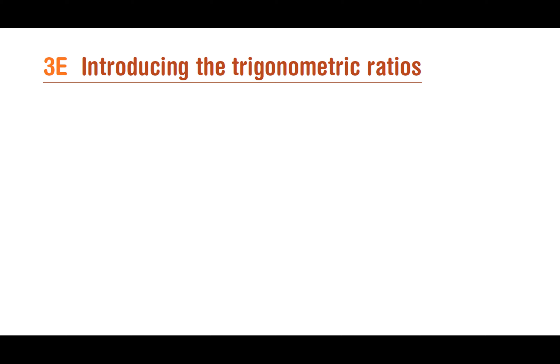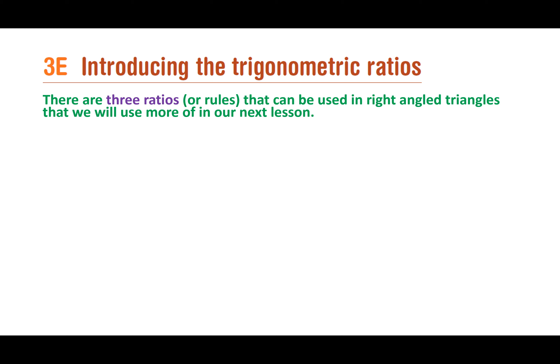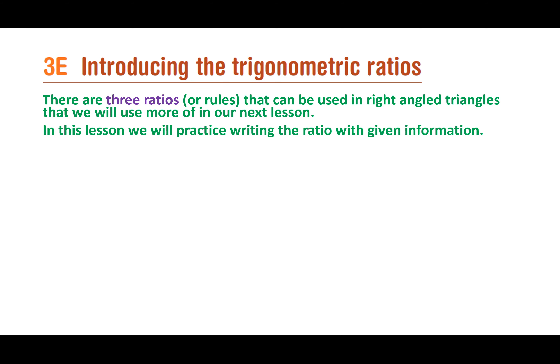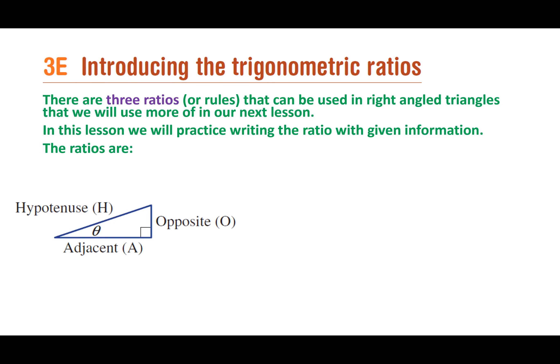When talking about the three ratios, there are three different possible combinations of sides that can be used in right angle triangles. This lesson is about identifying which ratio to use. So with our triangle — here's our angle called theta, the opposite going across, the adjacent, and the hypotenuse that goes across — let's look at each ratio.